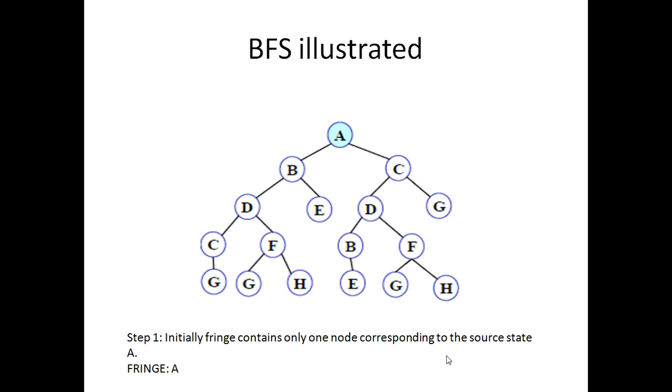As we have discussed, in uninformed search strategies we blindly follow the path. We just start from a root node and then move towards either left or right. It basically doesn't matter because we don't have any specific information about which direction to move or which node to select for expansion. As BFS is also an uninformed search strategy...